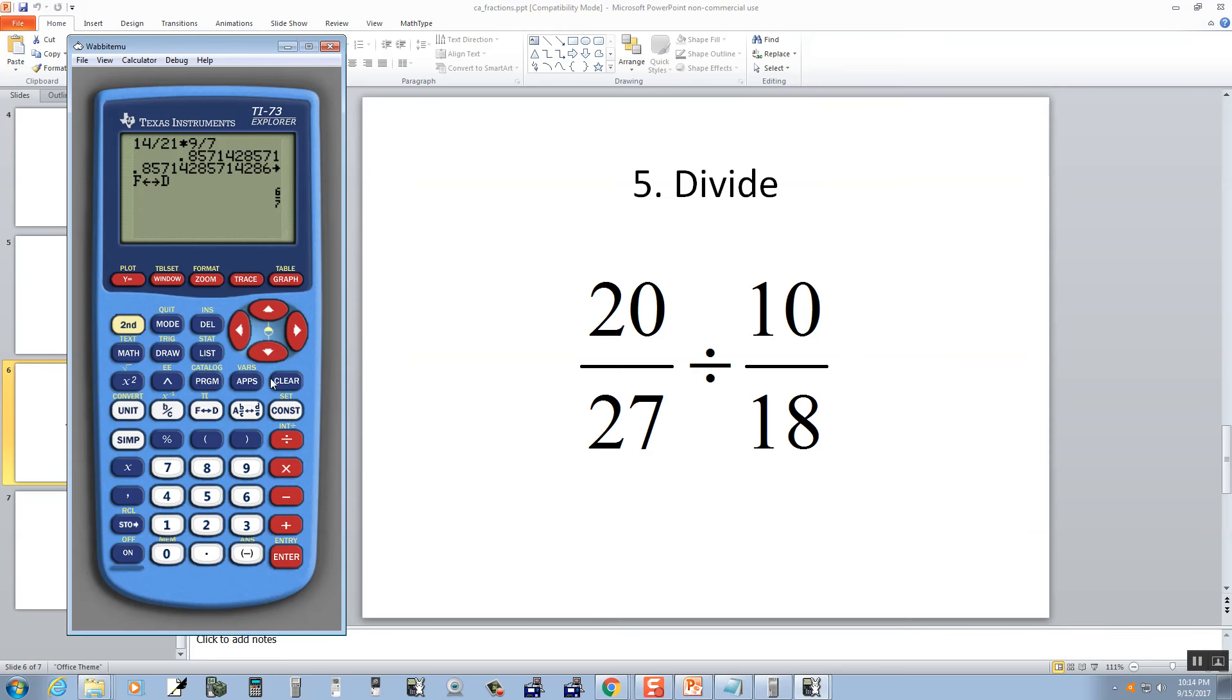Division. This one's a little bit different. In general, any time you're dividing fractions, you want to put parentheses around each fraction when you plug in your calculator. So if I do my beginning parentheses, 20 divided by 27, closing parentheses, divided by beginning parentheses, 10 divided by 18, closing parentheses, then push enter.